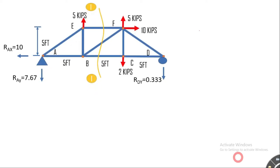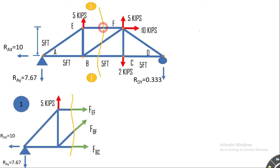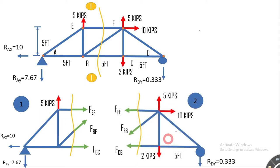After determining reactions, we cut a section through the truss, which we name section 1-1. You should cut a section so that it passes through the members whose internal forces you want to determine. The section does not need to be a straight line. It is suggested that the section should not pass through more than three members, since we only have three conditions of equilibrium. This section divides the truss into a left section and a right section.